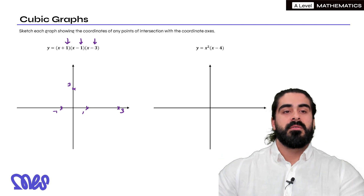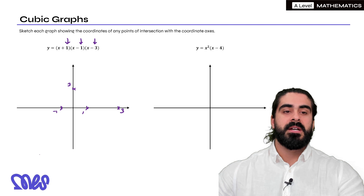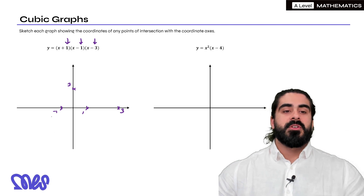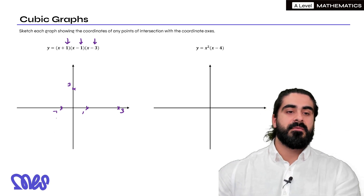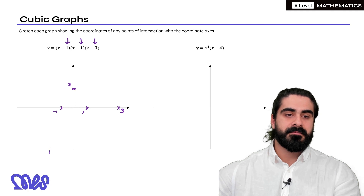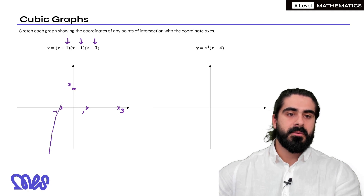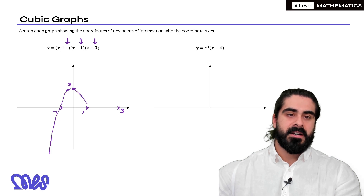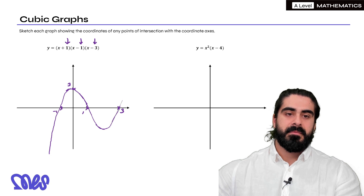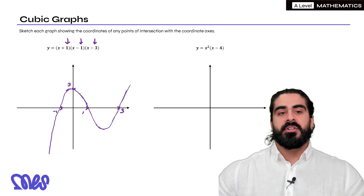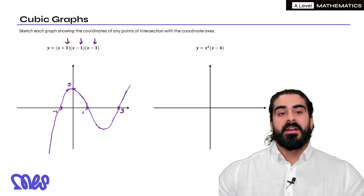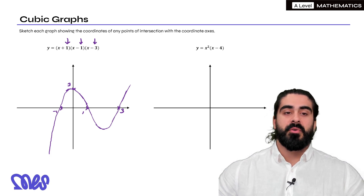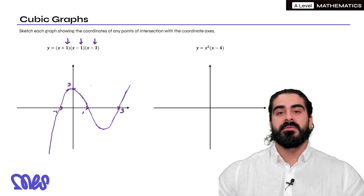We know the general form for a cubic starts from below and then goes up. So in this case going from minus one we're coming down, then we're coming up, we're going to cross at three and then come down and come back up. There'll be different variations to this because of where these turning points are. You could have had a turning point that passed three or before three — it doesn't matter because they haven't asked for it.